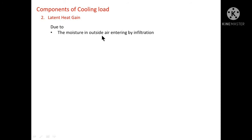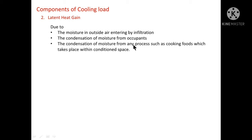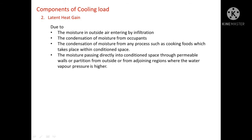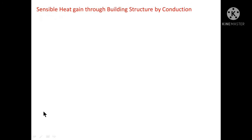The latent heat gain category includes moisture in outside air entering by infiltration, condensation of moisture from occupants, condensation of moisture from any process such as cooking foods taking place within the conditioned space, and moisture passing directly into the conditioned space through permeable walls or partitions from outside or from adjoining regions where the water vapor pressure is higher.